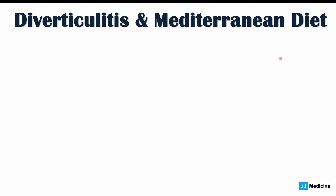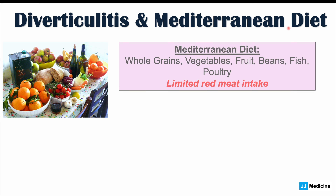That leads to another potentially helpful diet: the Mediterranean diet. It includes whole grains, vegetables, fruit, beans, fish, and poultry, with limited red meat intake. While there is not enough research specifically on the Mediterranean diet and diverticular outcomes, the diet itself contains good levels of fiber from whole grains and fruit, and limits red meat — which is a minor risk factor for diverticulosis and diverticulitis.